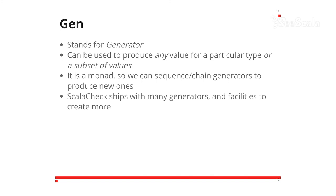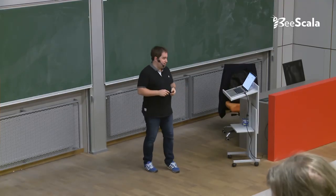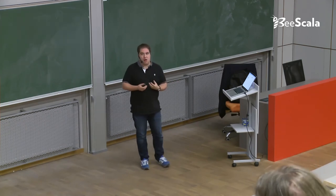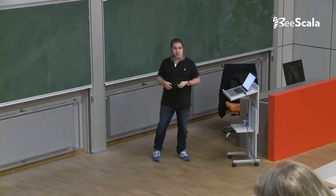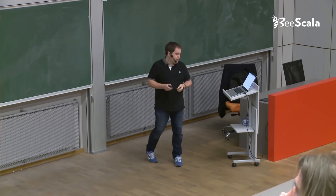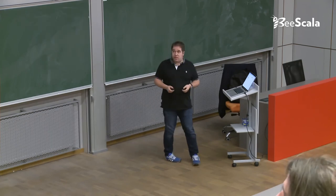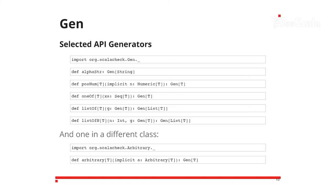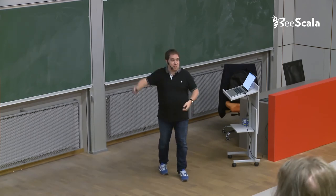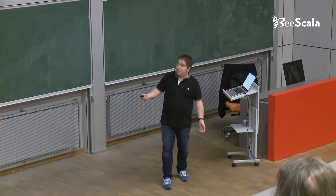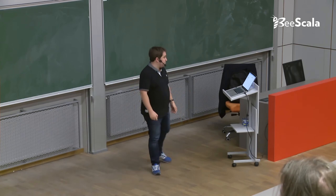A few of the built-in generators. As long as we make the right import, all of these are available to us. We can create strings that only contain letters. Out of the box, the generator for strings produces kanji and emoji and numbers and basically anything that's printable. We also have positive numbers, and notice that this is parameterized — as long as there's a type class of Numeric for the type, we can produce positive numbers. This works with integers, floats, doubles, and if someone writes a number library like something in Spire, as long as there's a Numeric instance, we can create positive numbers.